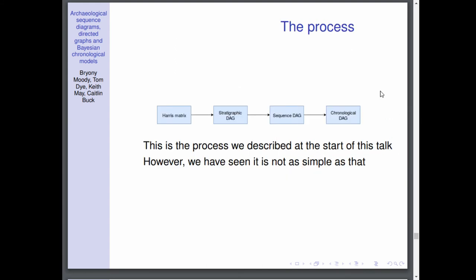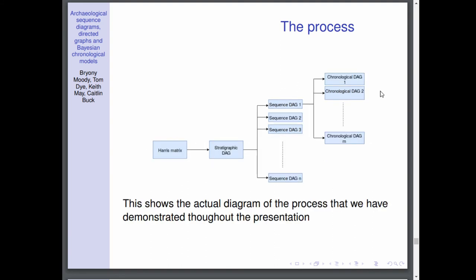So I mentioned at the start of the talk that this is the process that we go through, but I basically fibbed a little and it's actually something more like this. We start off at the Harris matrix, we then proceed to the stratigraphic DAG, but then we have multiple sequence DAGs that we can consider, and from each sequence DAG we have multiple chronological DAGs that we can consider. This sequence DAG number n, there's n number of sequence DAGs. In our case I said there was 32.